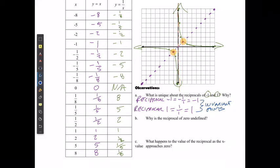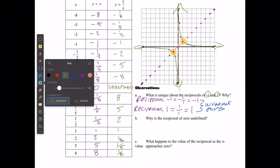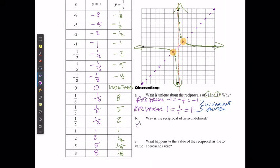Why is it that the reciprocal of 0 is undefined? So in here, we could state that, like we did in previous units, this is undefined. Why is it undefined? You can't divide by 0.